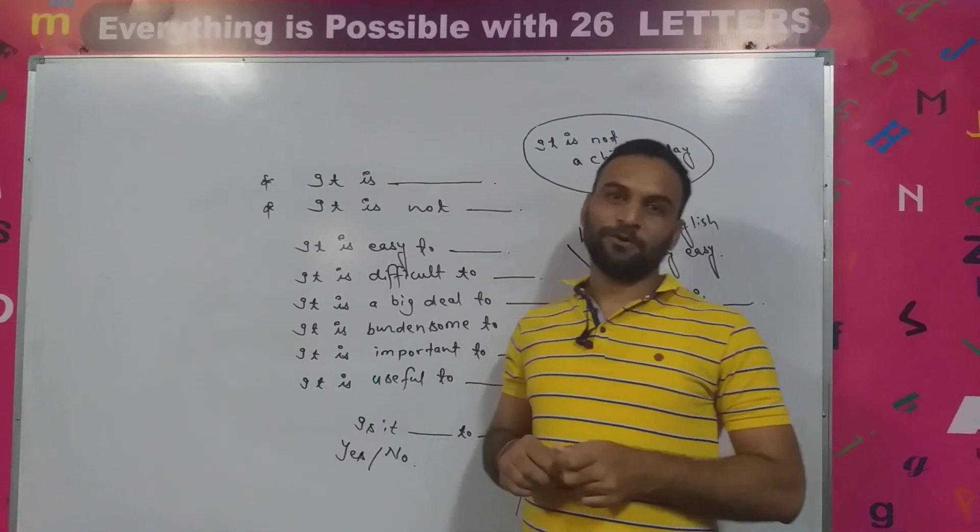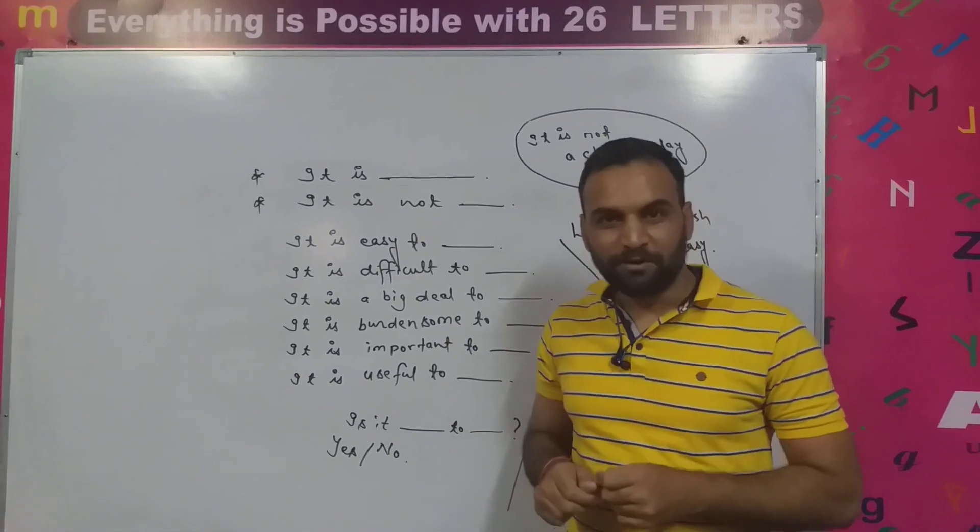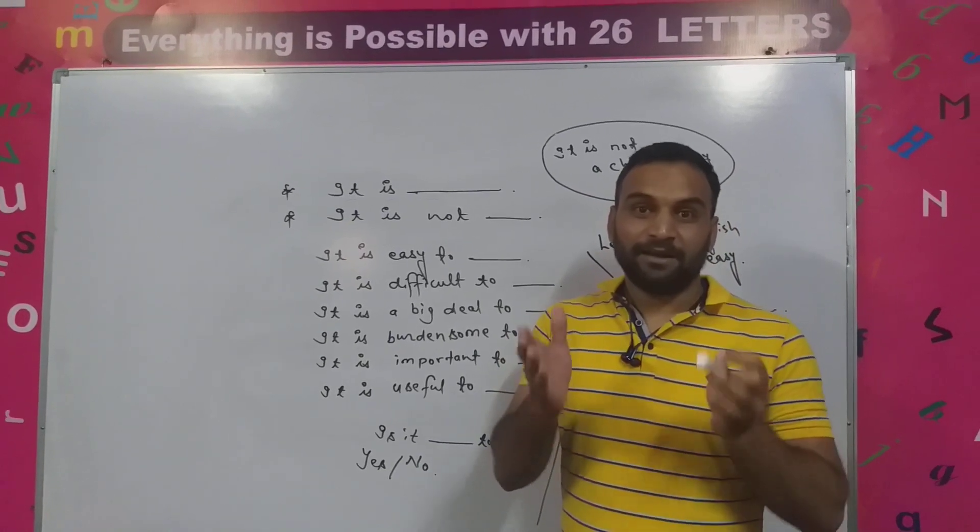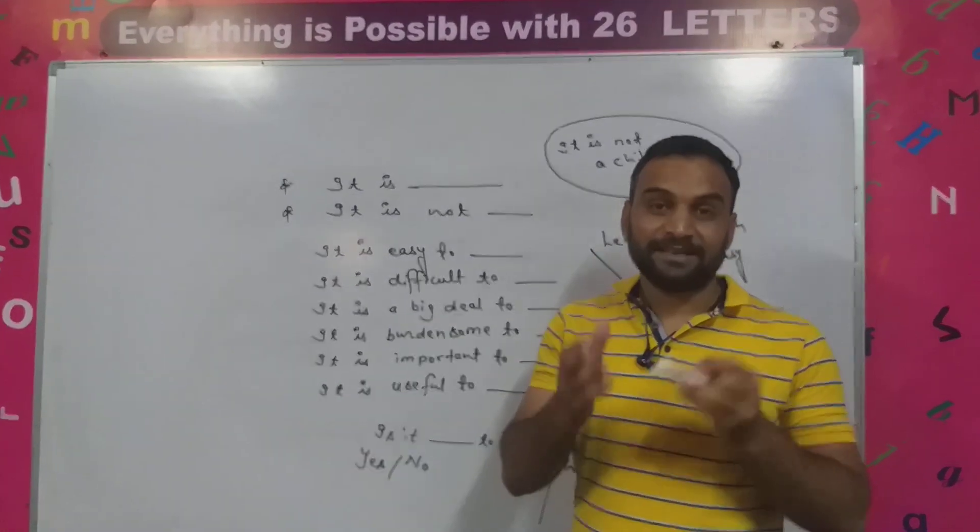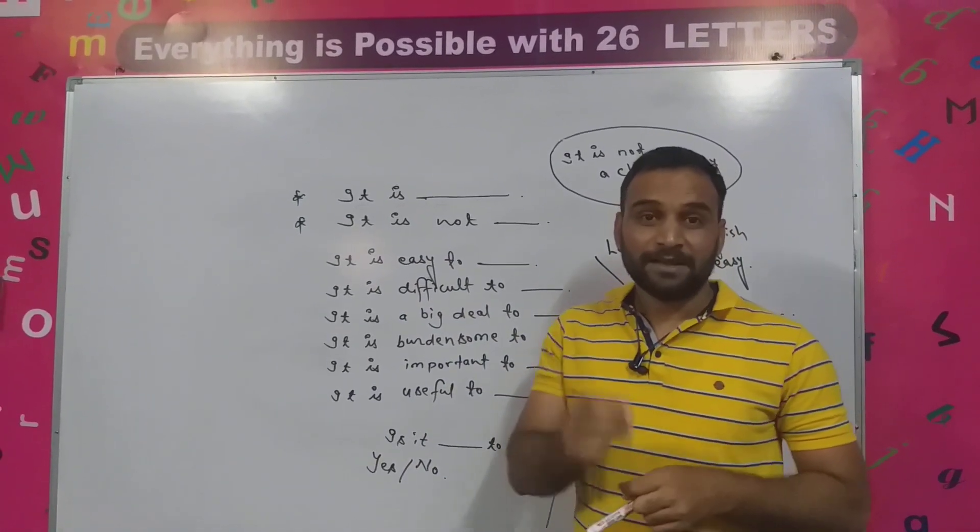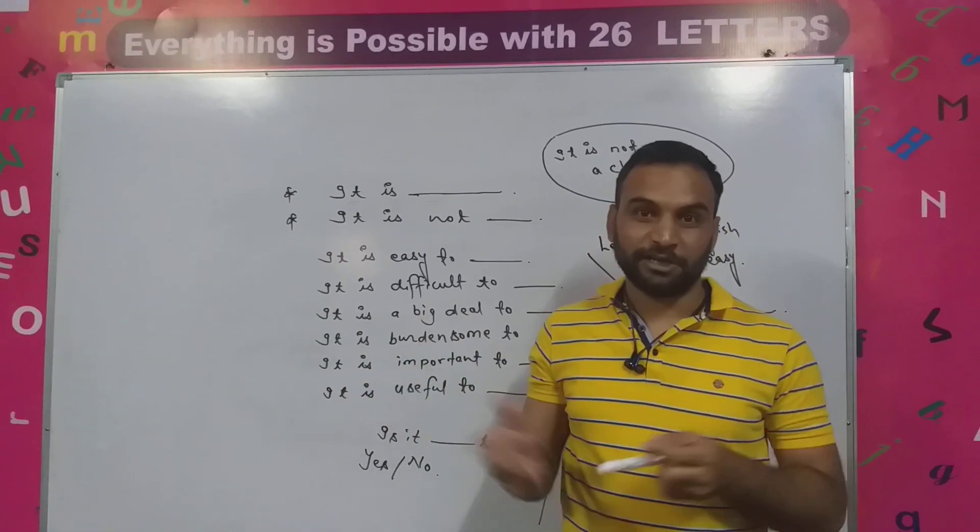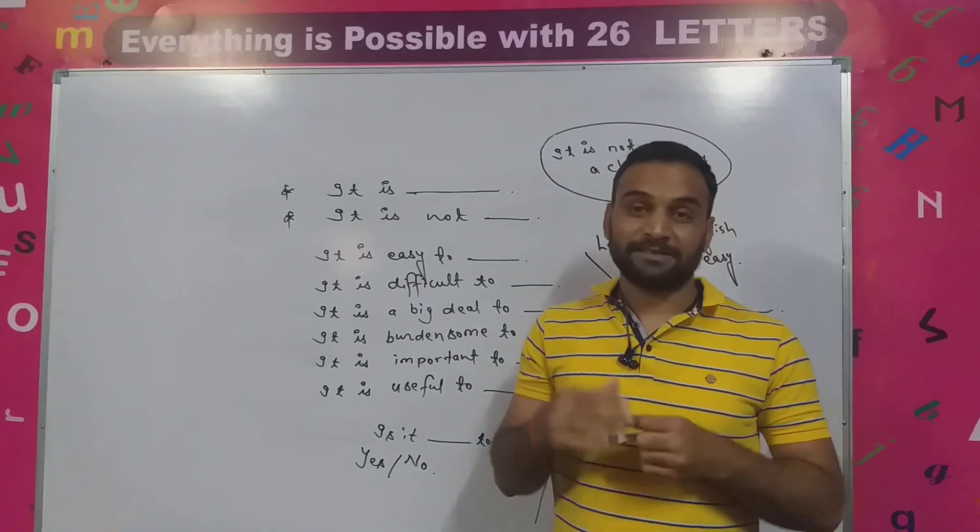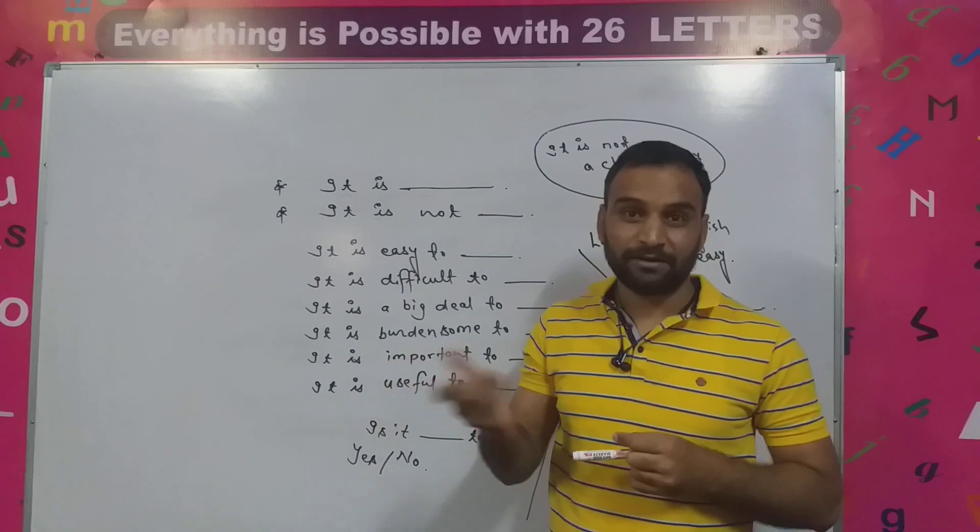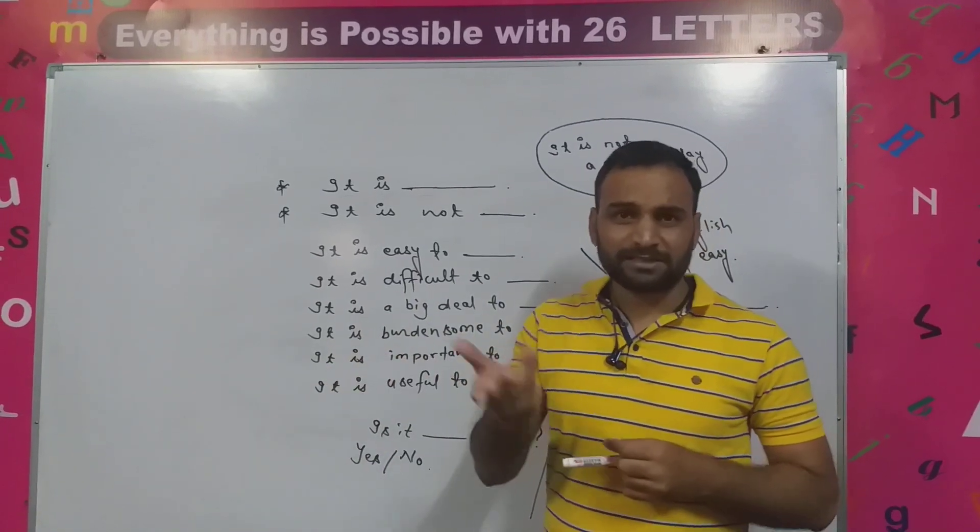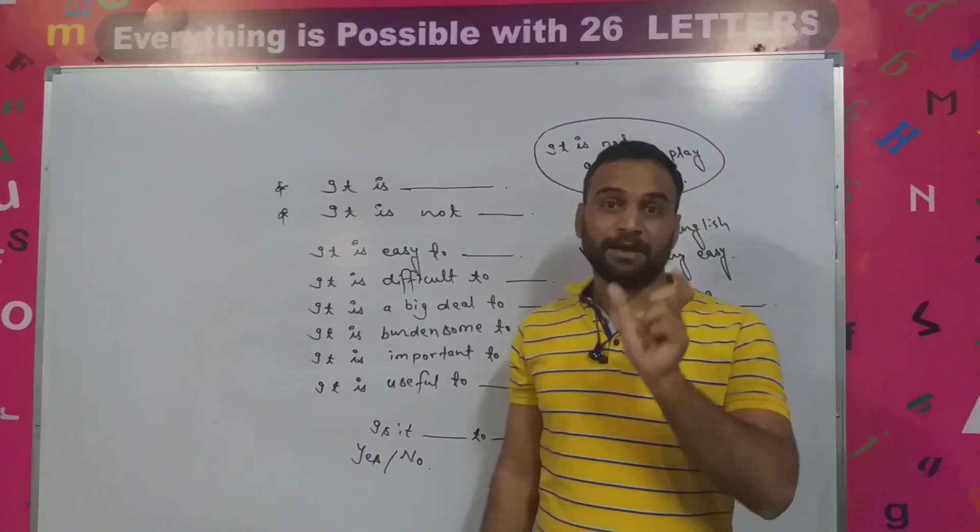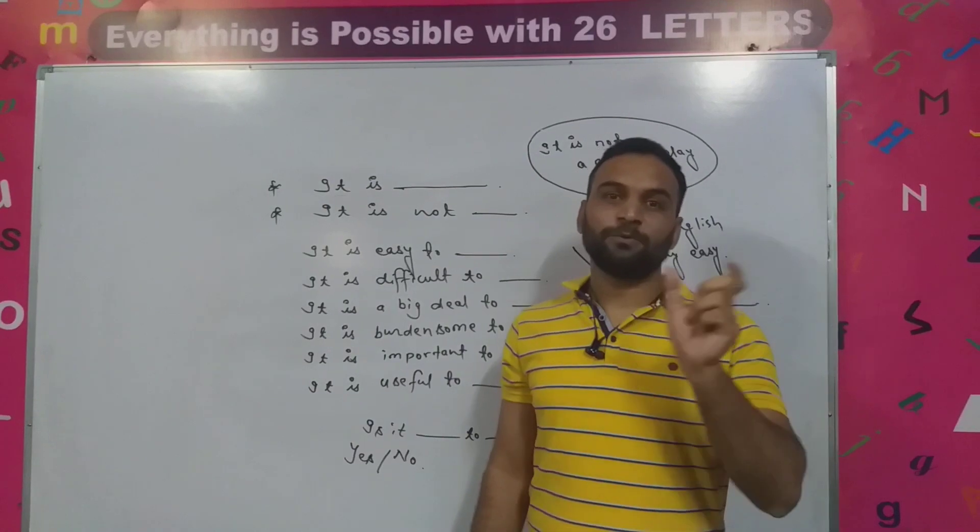And today once again I have got a very simple and important topic for you guys. A lot of the time it happens that in our sentence there is no subject. Sentence as you know is a group of words that gives a complete meaning, which is made up of subject, verb, and object. But today we're going to talk about small sentences where we don't have a verb and we don't have a particular subject. So in that situation what will we do?